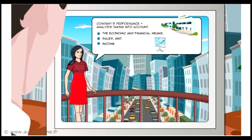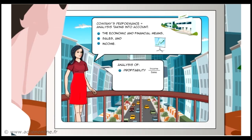The performance of the company will be analysed taking into account the economic and financial means, the change in the operations and the results obtained. The productivity, profitability and return analysis will consist of comparing those different factors with each other. Profitability is the income to sales ratio. Productivity is the sales to assets ratio. Return is the income to assets ratio.